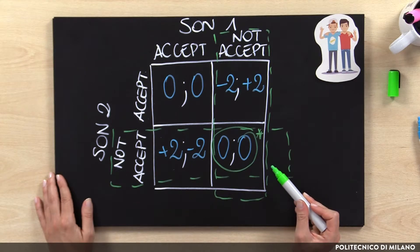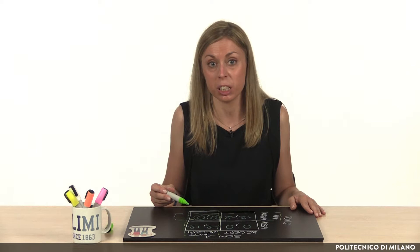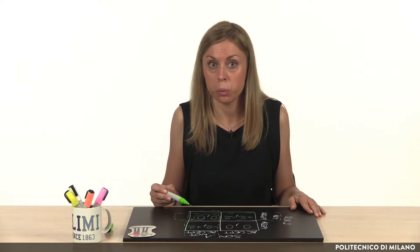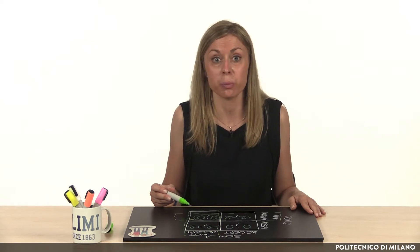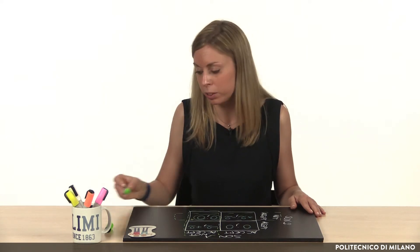Given this payoff matrix, we would expect that the two brothers won't cooperate. Actually, it is more reasonable to imagine that brothers are not pushed by either the first goal or the second goal alone, but by a combination of those. So we are now going to fill in the payoff matrix considering the combination of these two different objectives: overall revenue as well as differential revenue achieved in relation to the brother.